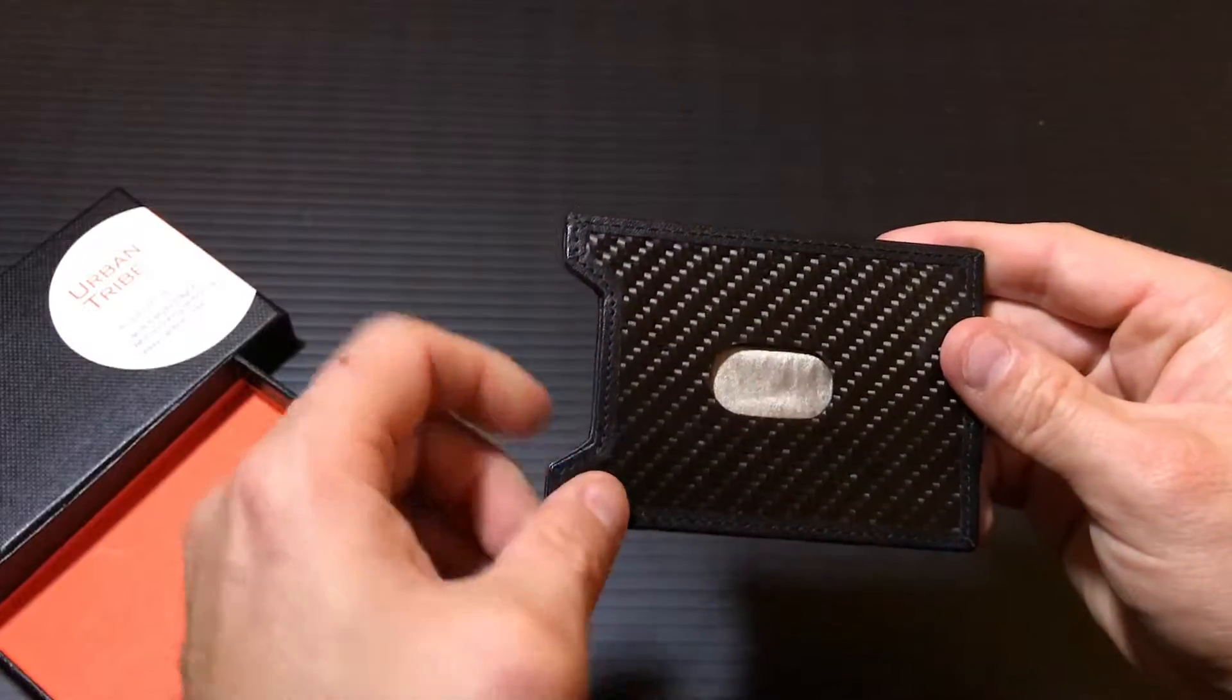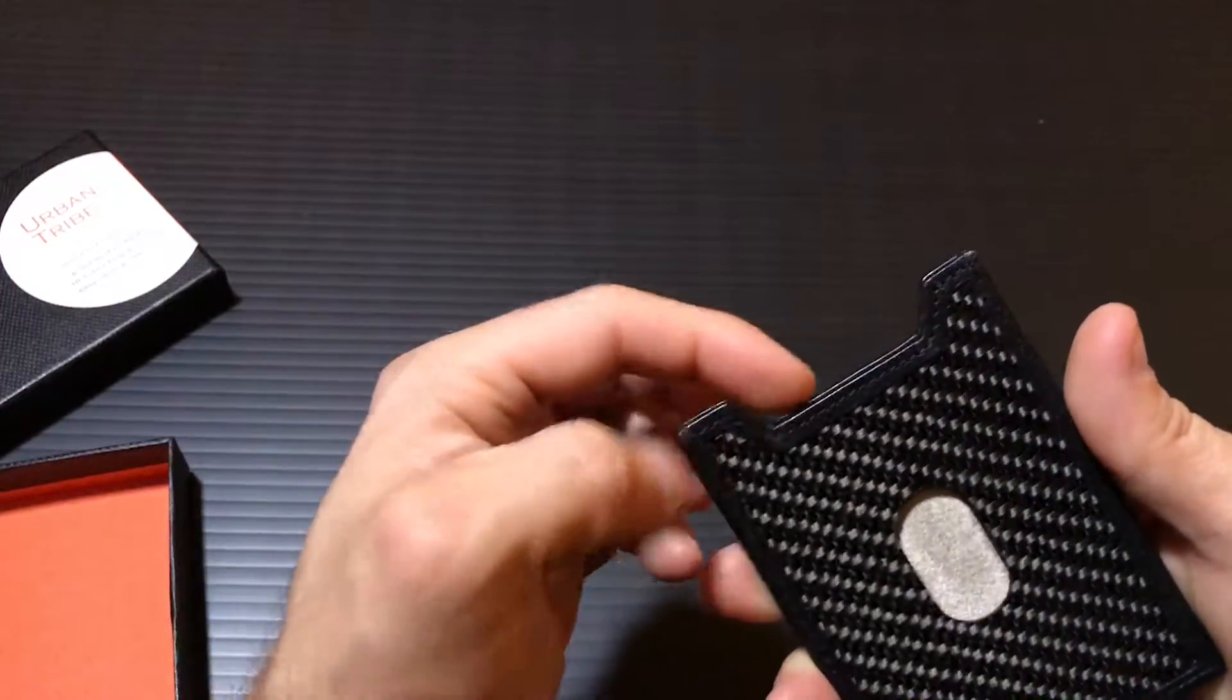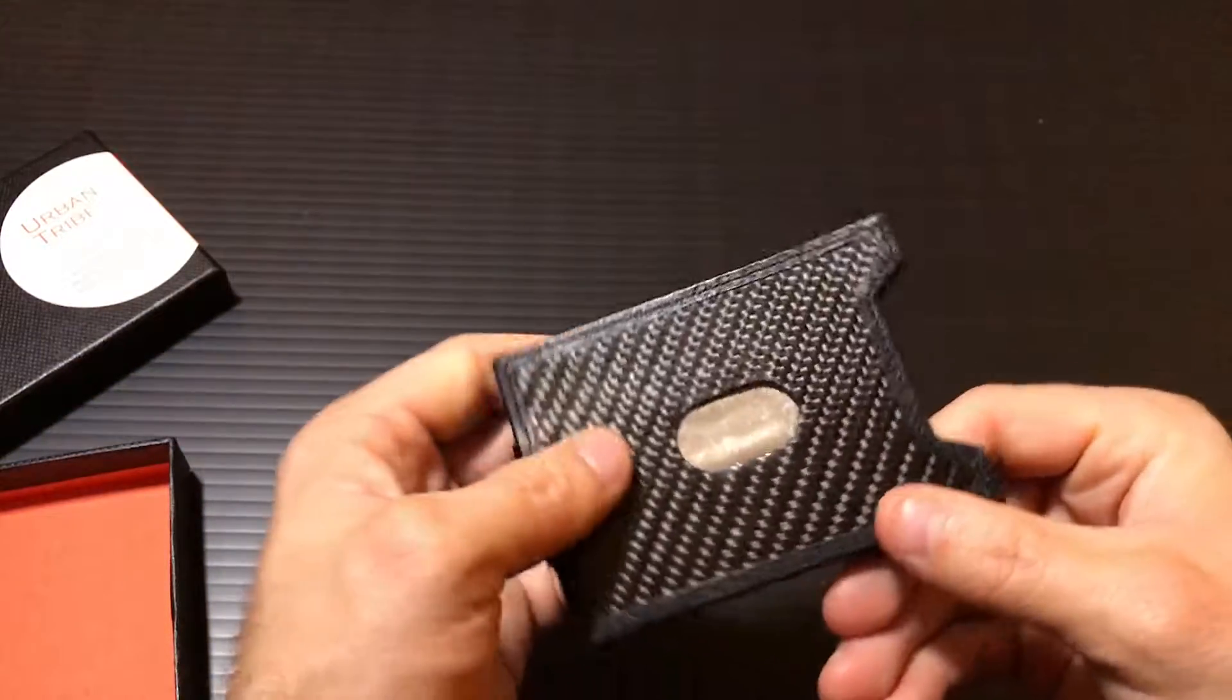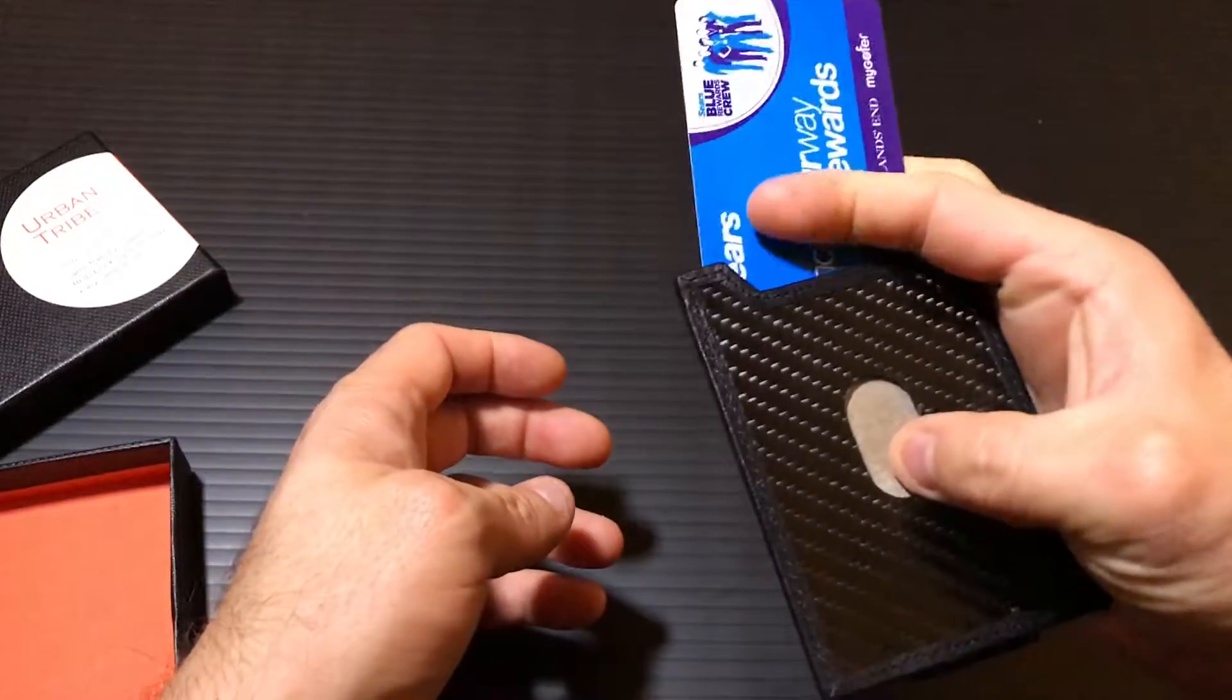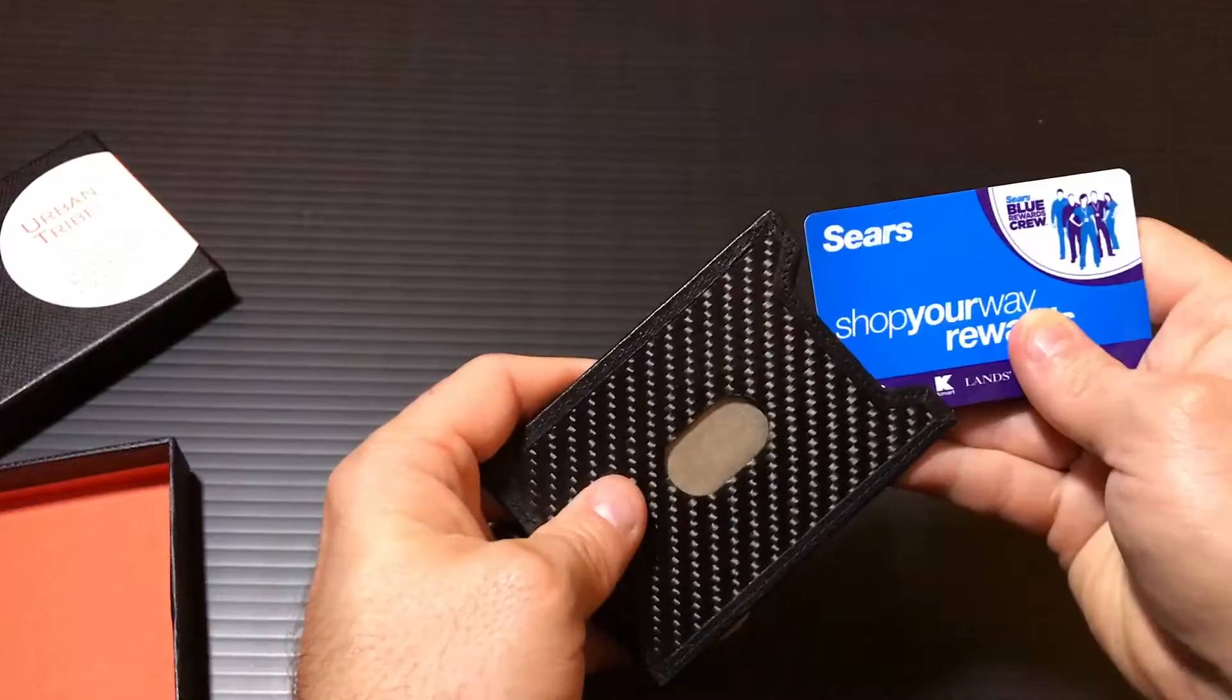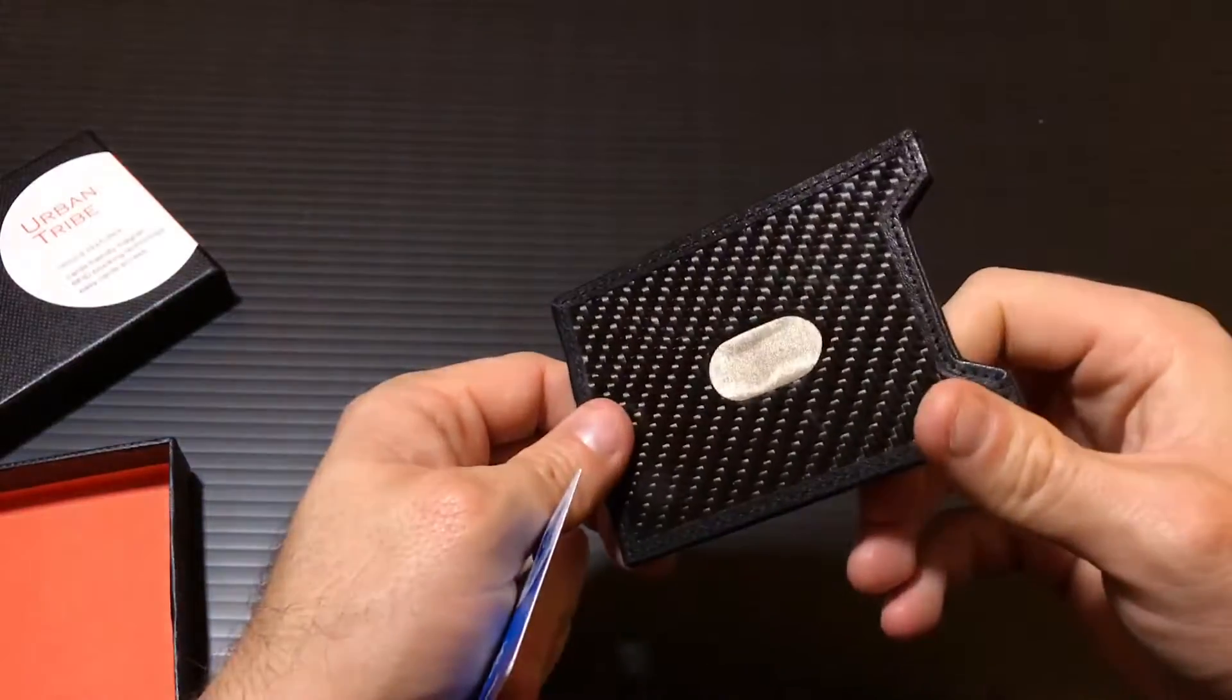The design of this wallet allows you to grab your cards from the notched out opening up at the top here but you can also use this open area to slide cards right out. What's kind of cool is you can actually just do it all one-handed if you wanted to. That notched area in the center allows you to pull out a card one-handed if you needed to which is kind of handy.